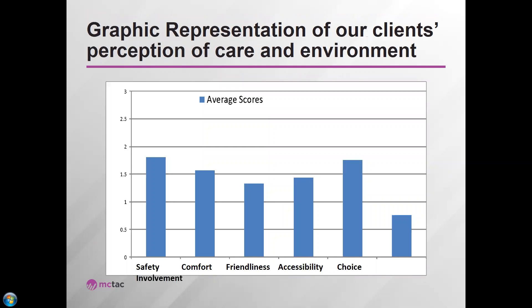You can also think about how you represent and display data. For example, when we look at our clients, if we do surveys — which many organizations do — we take a look at key indicators. These are just examples: safety and comfort, friendliness, accessibility, choice and involvement. If you have something like this, a team is in a position to say, gee, what's going on here? It looks like our clients are really low in their sense of involvement in their own care, so we need to take a look at that. The data doesn't give you all the answers — it helps you to identify areas where quality could be addressed.